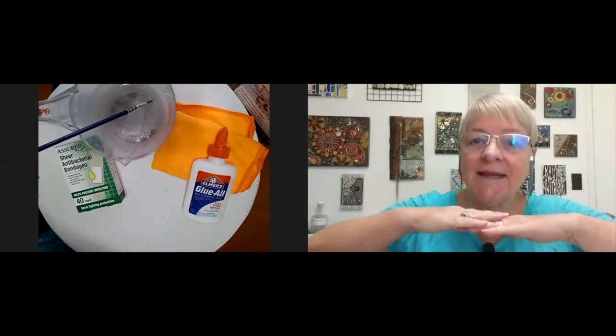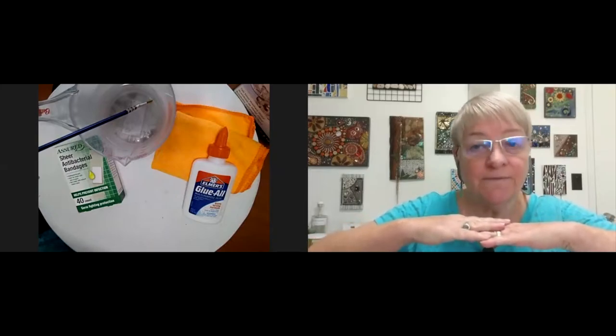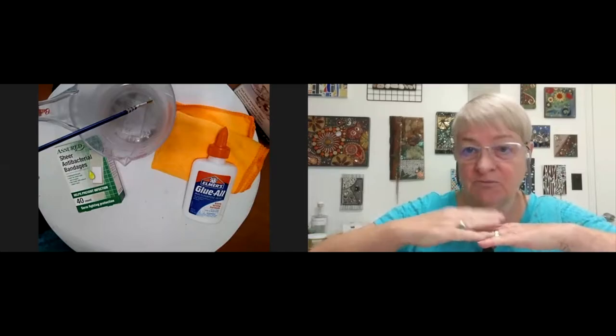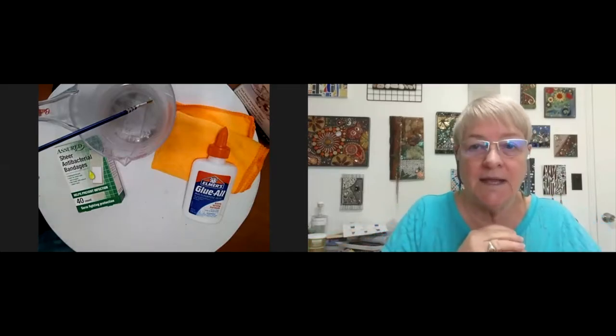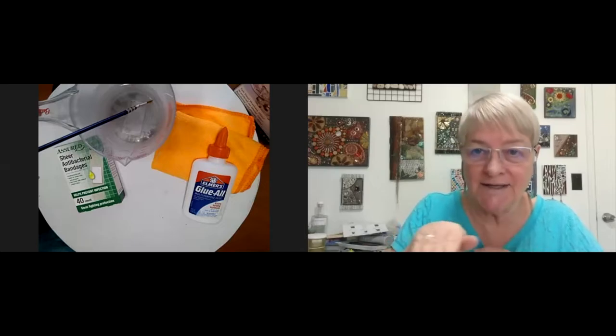Substrate. Anything that you put your mosaic on is the substrate. Whether it's a glass vase or a flower pot. Those are substrate. Could be your garden wall. Adhesive is the glue you use to stick pretty things on with. It could be a regular glue, a real sticky glue or waterproof glue. It doesn't matter. They're all adhesive.